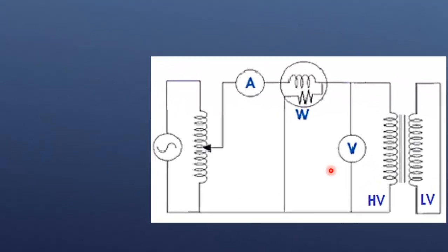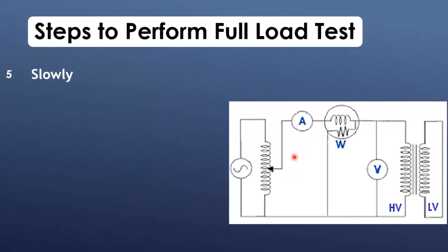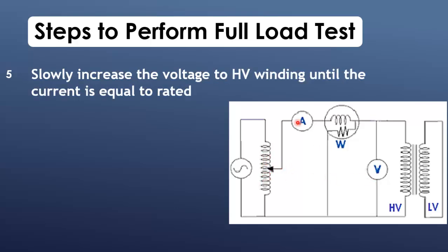Now after connection, let's perform the test. Since the low-voltage winding is short-circuited, the transformer will draw a large current initially, and the voltage applied to the high-voltage winding must be gradually increased to avoid overloading the transformer. Slowly increase the voltage until the current on the high-voltage side reaches its full-load current.